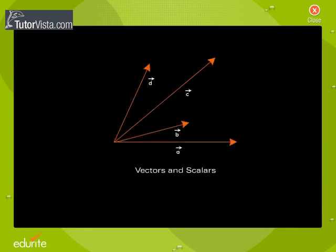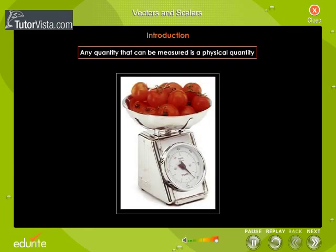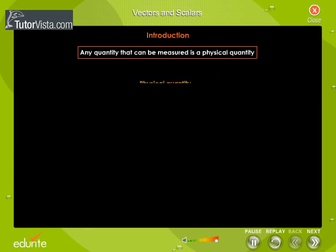Vectors and Scalars. What is a physical quantity? Any quantity that can be measured is a physical quantity. Physical quantities are classified as vectors and scalars.